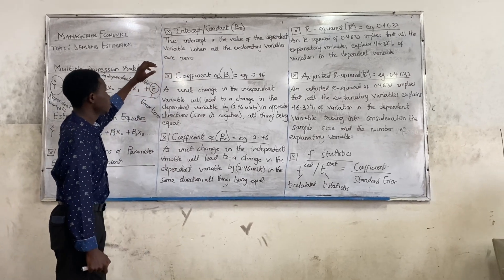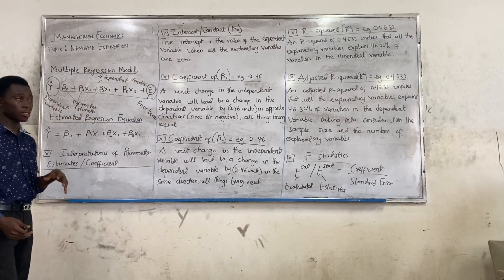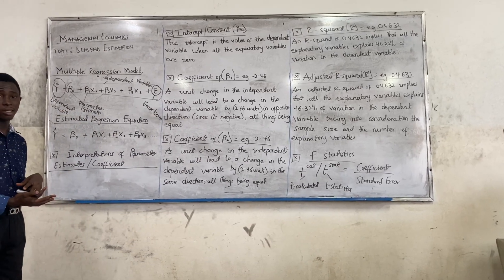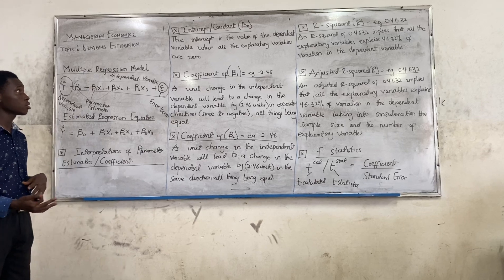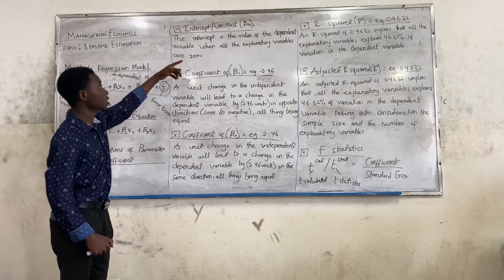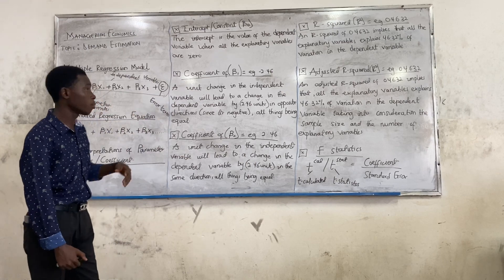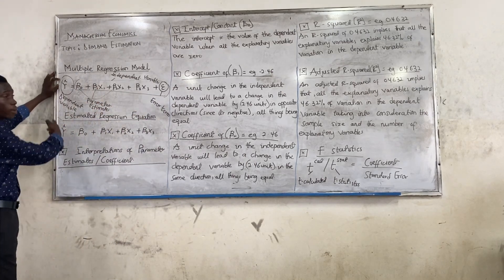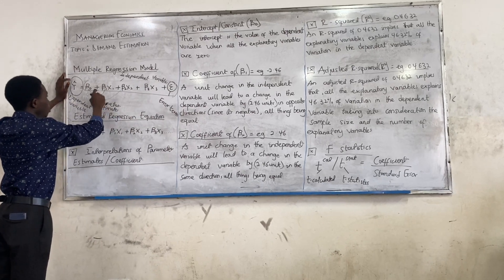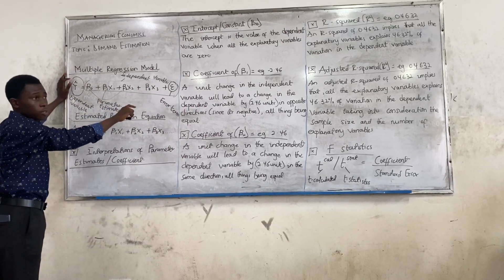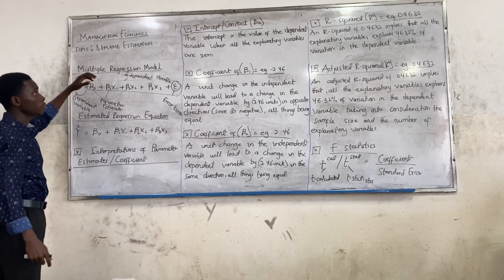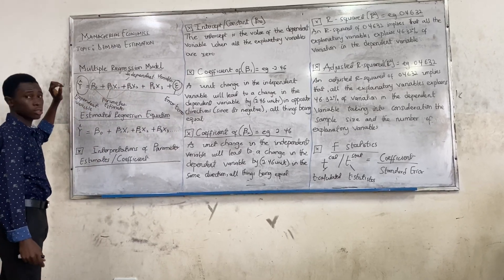With the β₀ — you wouldn't be given the question that says 'β₀'; you would see 'intercept' or 'constant.' It's the same thing. The intercept is the value of the dependent variable when all the explanatory variables are zero. That's how we interpret the β₀.